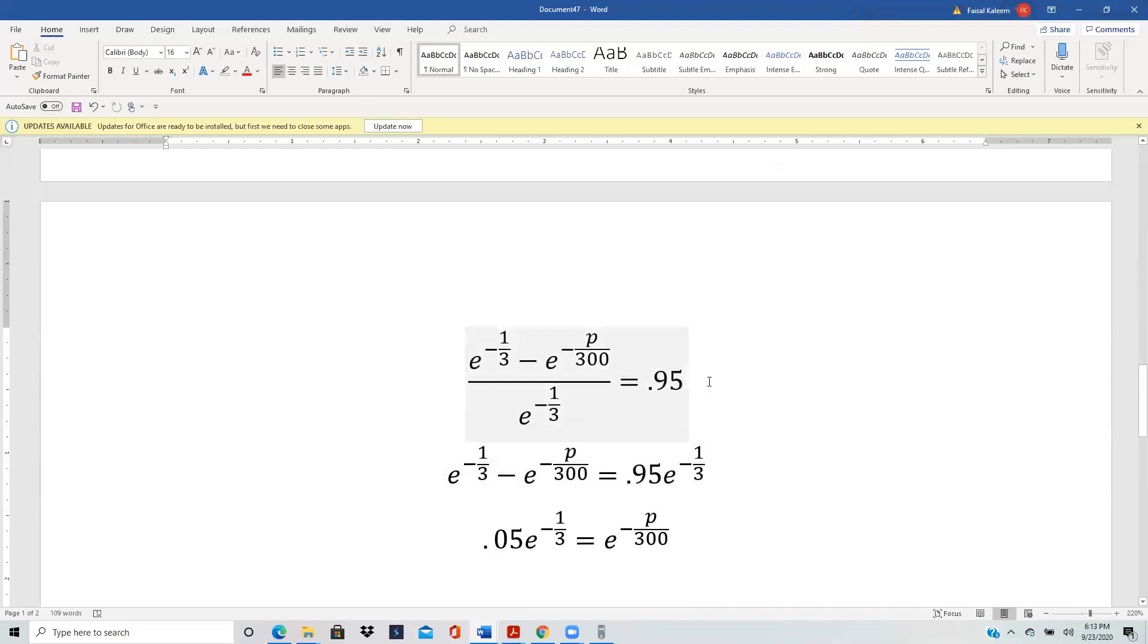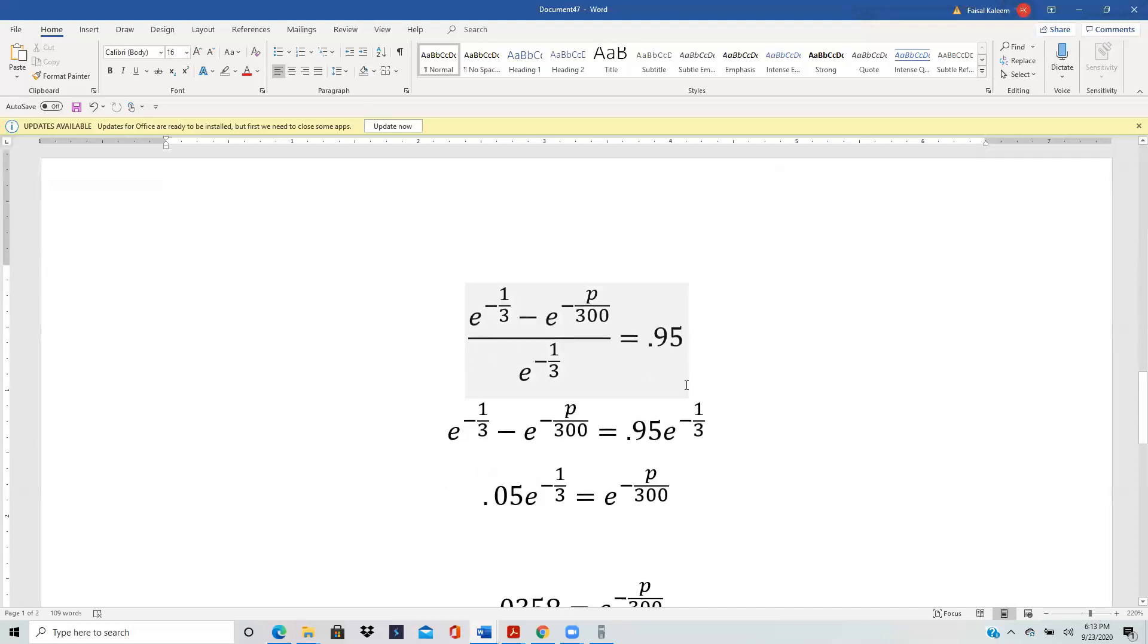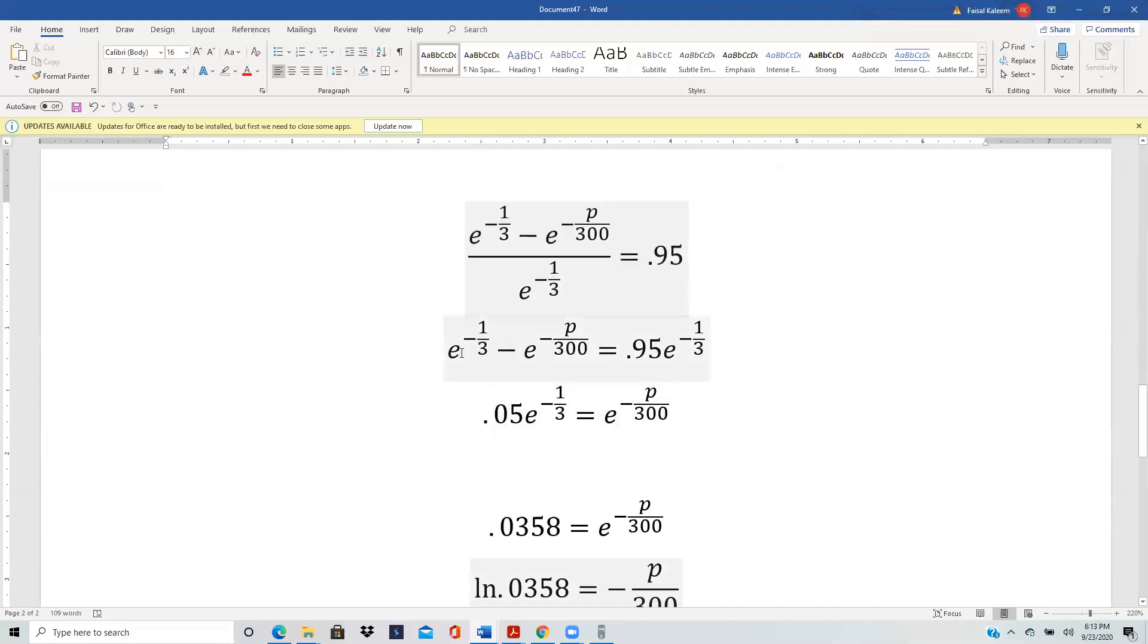And then you take the e^(-1/3) to the other side. And then you have like terms here, e^(-1/3) and 0.95 e^(-1/3). So when you bring this one to the left and subtract, 1 minus 0.95 is 0.05. And you take the e^(-P/300) to the right.